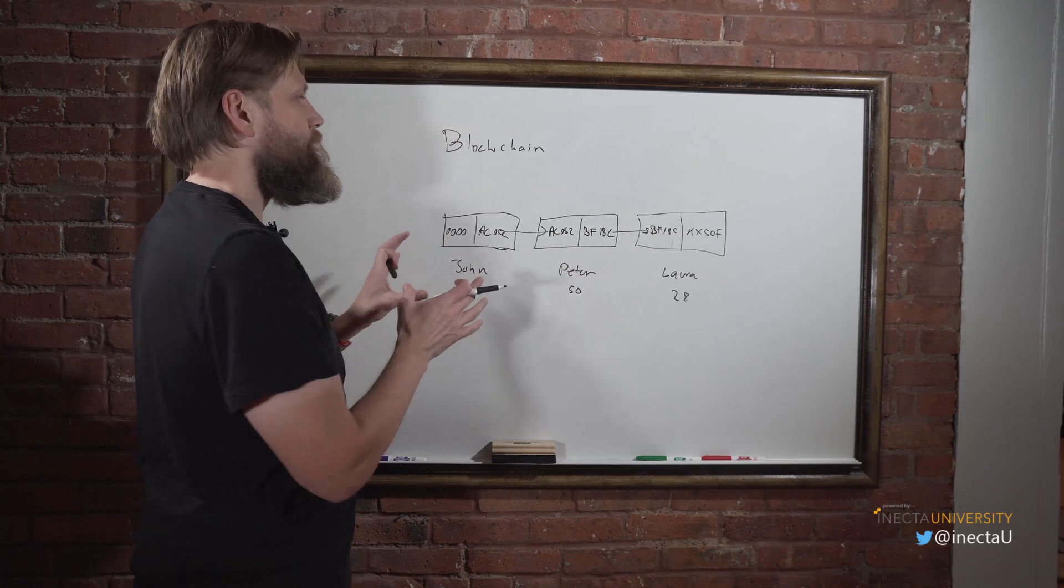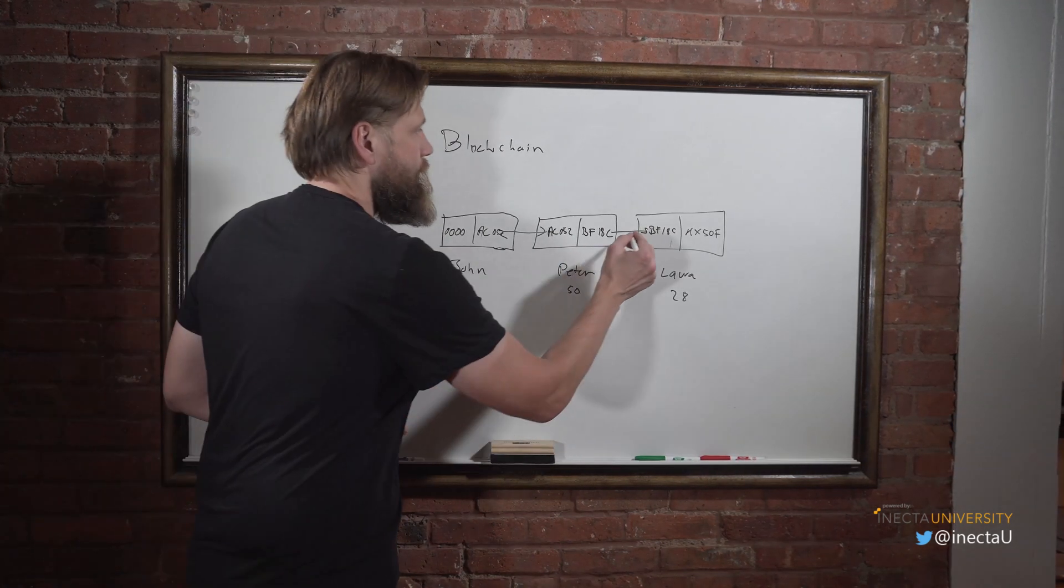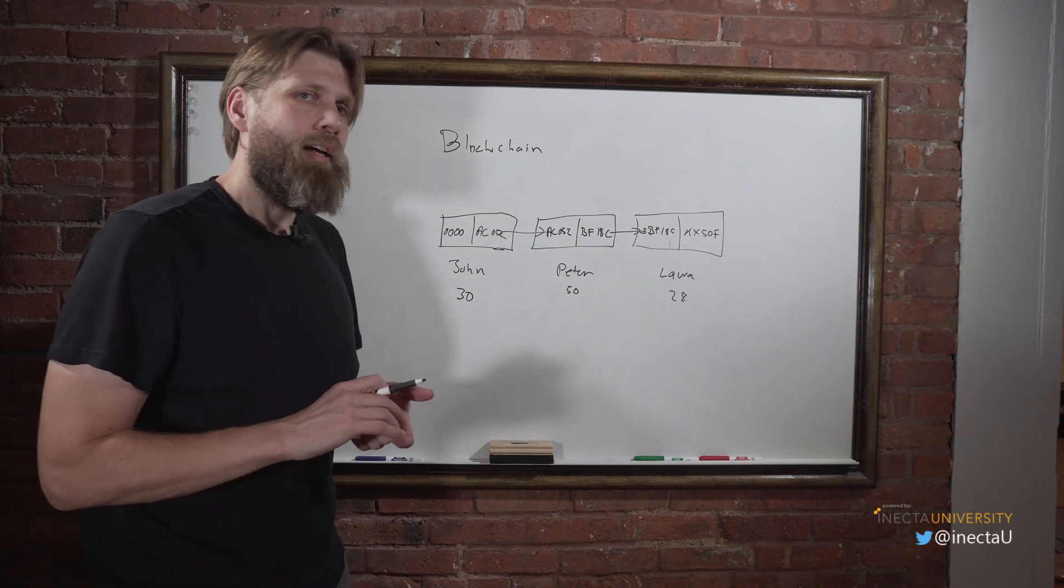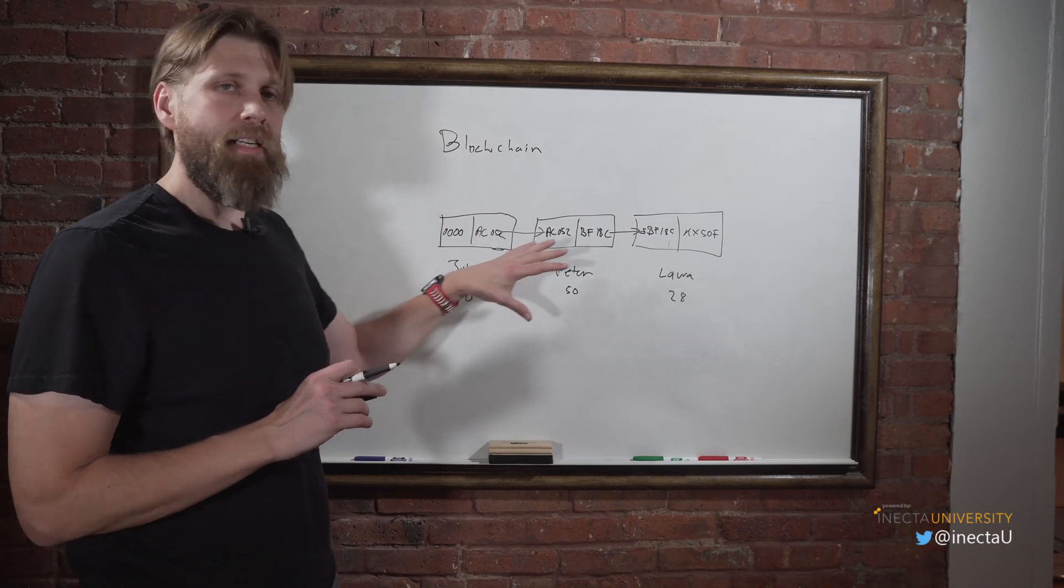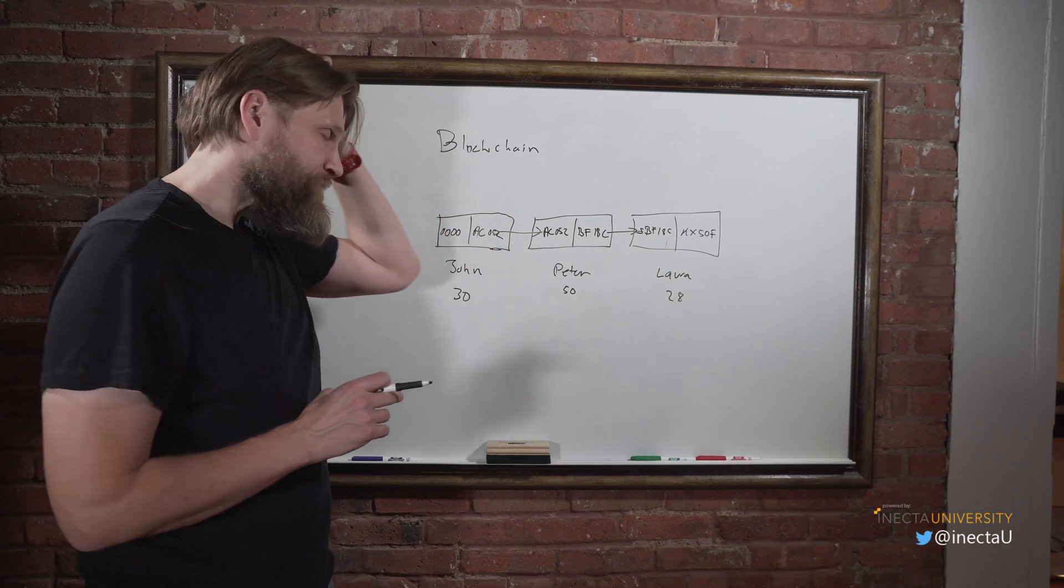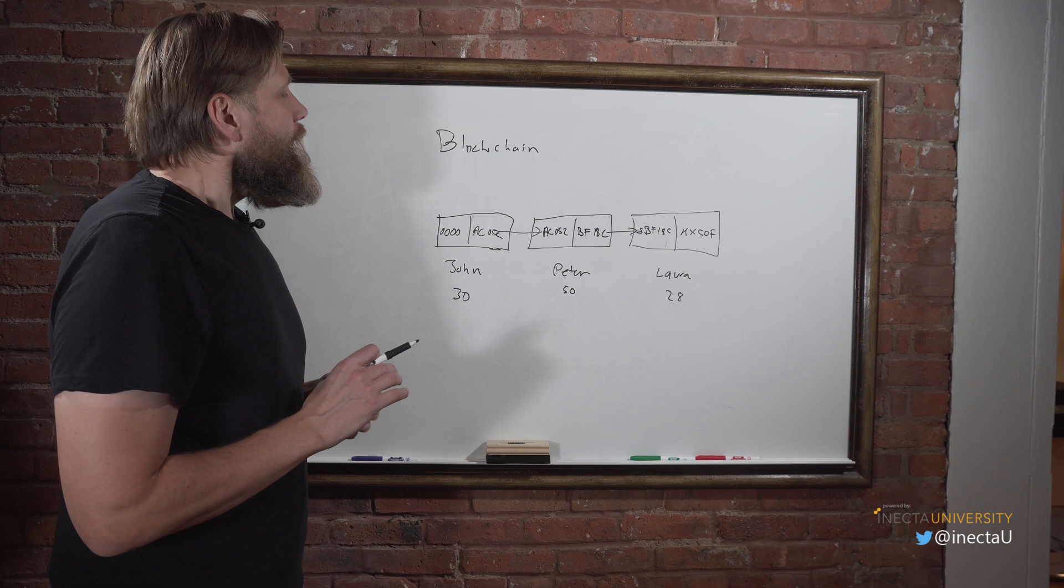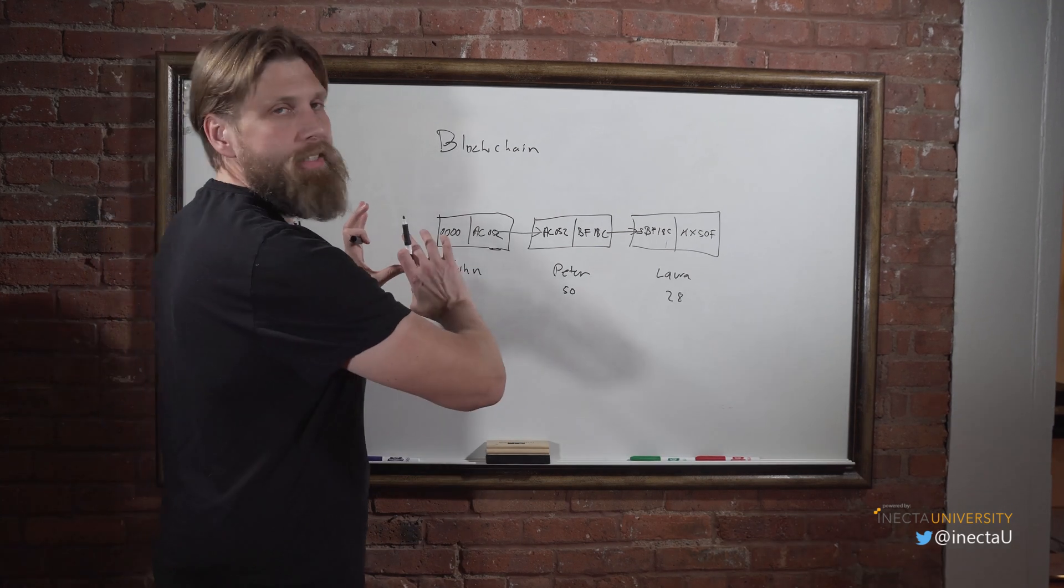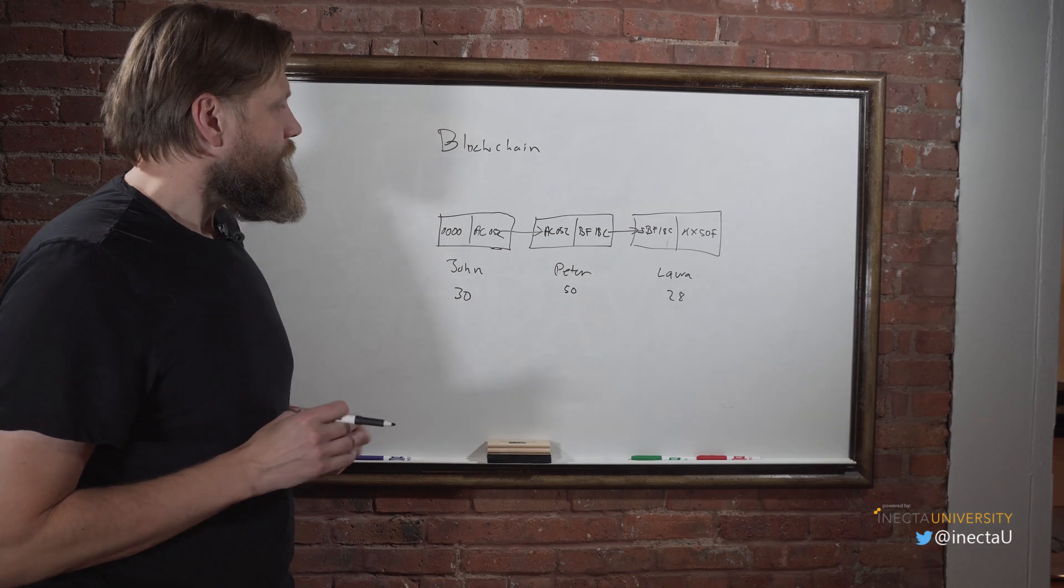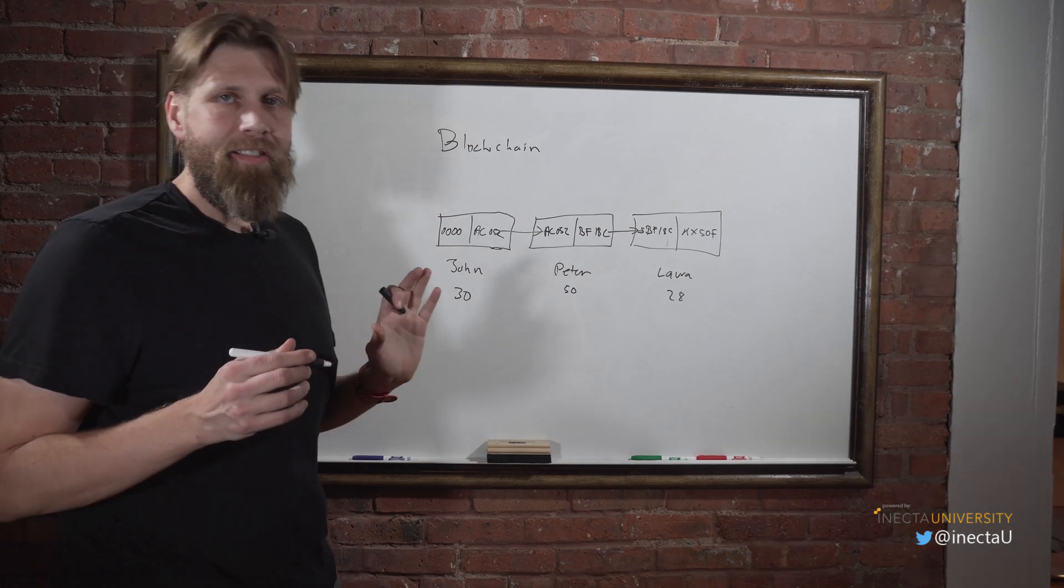So BF18C, and then this could be Laura and that could be 28, and that could be HX50F. This is how the blockchain works - a construct of blockchain - and it connects together. If you're into IT and you've done a lot of IT before, you recognize this is sort of like a linked list that actually links back as well. So we just create this chain, blockchain, all the way through.